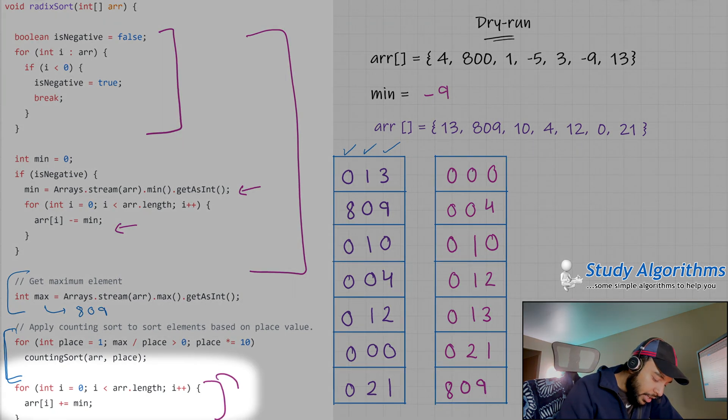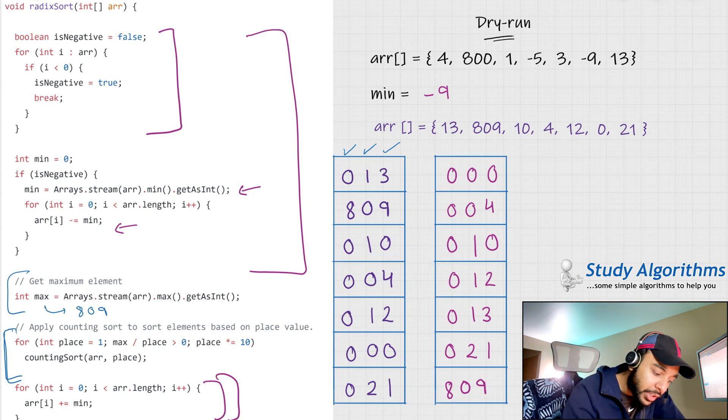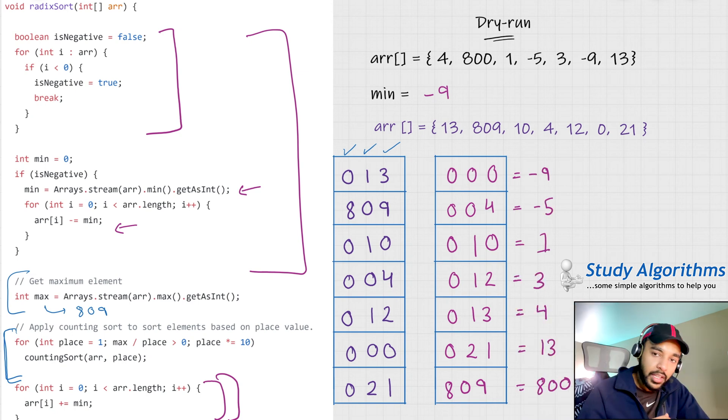So as a last step, what we do is we again subtract back the minimum number from all of these elements. Once you do that, all of these elements would become... So you see, ultimately we got all the original elements that needed to be sorted.